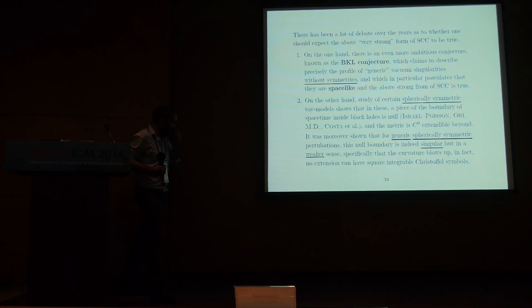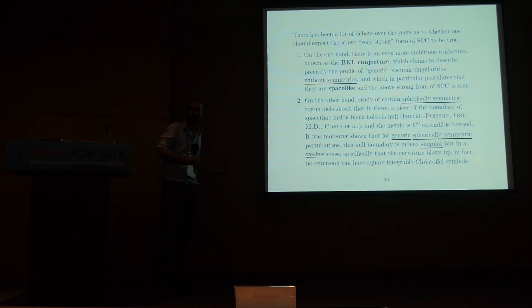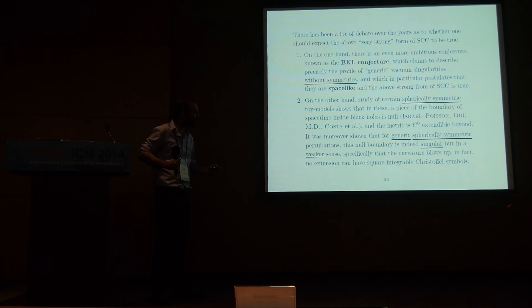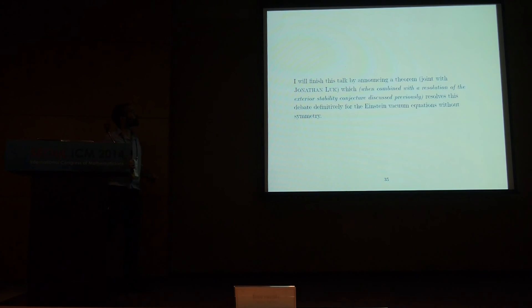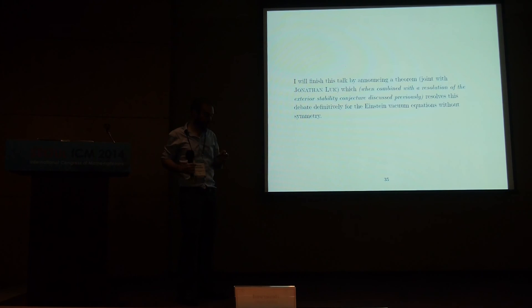There's been a lot of debate in the literature as to whether very strong cosmic censorship should be true. On the one hand, there is an even more ambitious conjecture in the physics literature known as BKL, which claims to describe precisely the profile of generic singularities. Part zero of that conjecture, in some sense, postulates that they are indeed spacelike and the above strong form is true. On the other hand, there was a spherically symmetric toy model — originally due to Israel and Poisson, and various people worked on it including myself way back in my thesis — in which something different happened. In this toy model, what you saw generically was that you'd always have this null boundary, at least a piece of it — so it wasn't at all like Schwarzschild, it wasn't spacelike — but the null boundary itself was singular. However, it wasn't singular in the way Schwarzschild was singular; it was singular in a weaker sense: the Christoffel symbols were not square integrable, but you could extend the metric continuously beyond.